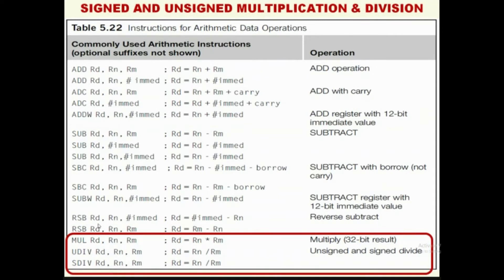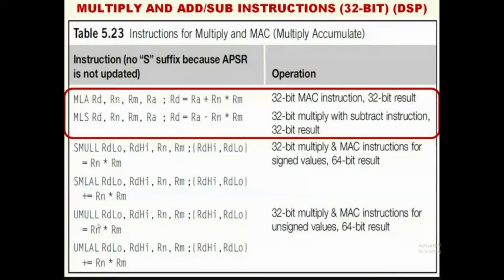There are also multiplication and division instructions. MUL RD, RN, RM means RD = RN × RM. For unsigned division, UDIV computes RN divided by RM and RD contains the quotient. SDIV performs signed division of RN by RM and the result is stored in destination register RD. Table 5.22 is a summary of arithmetic data operations with different addressing modes.